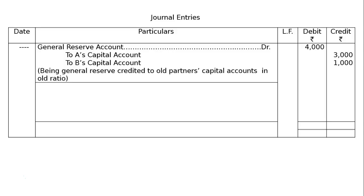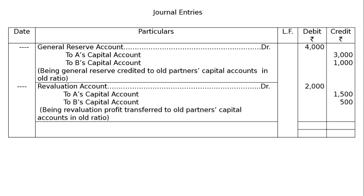Revaluation of assets and liabilities resulted in a gain of 2,000, and this should also be distributed among old partners in the old ratio. Revaluation account debited Rs. 2,000 — to A's capital account Rs. 1,500, to B's capital account Rs. 500. Being revaluation profit transferred to old partners' capital accounts in old ratio. The total debit and credit side will be Rs. 6,000 each. This is the final answer.